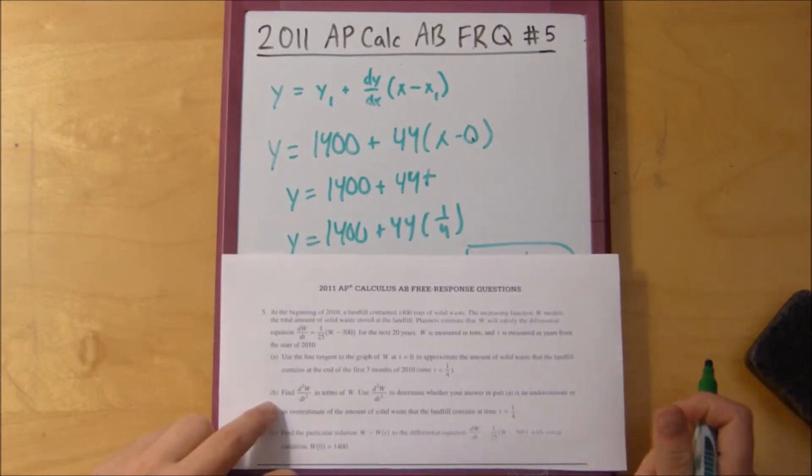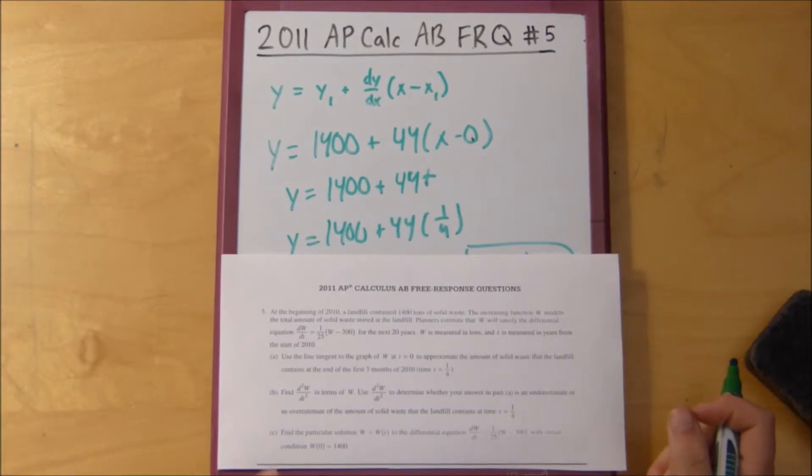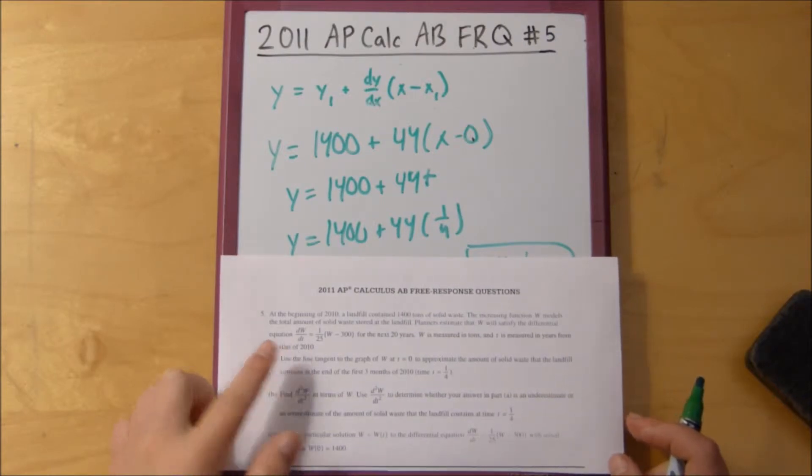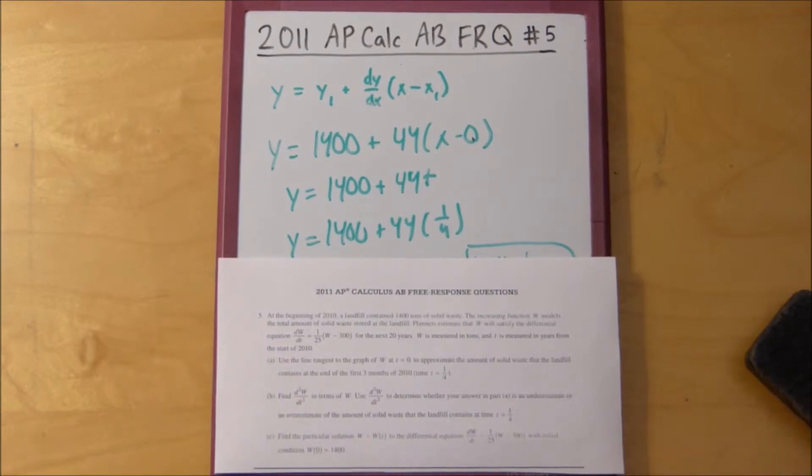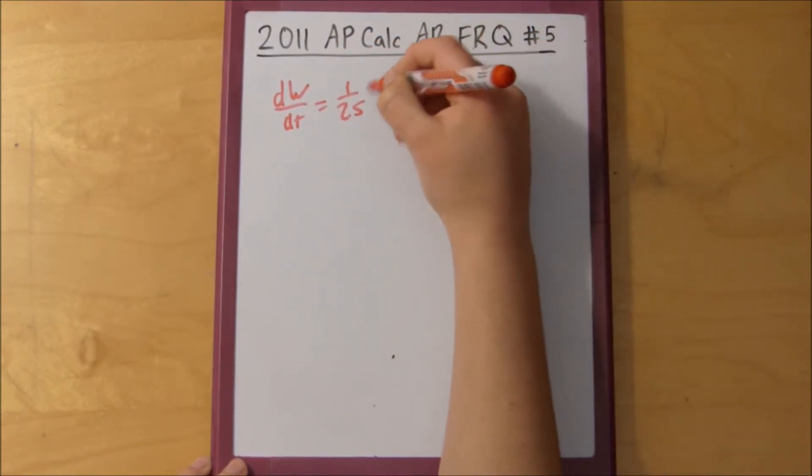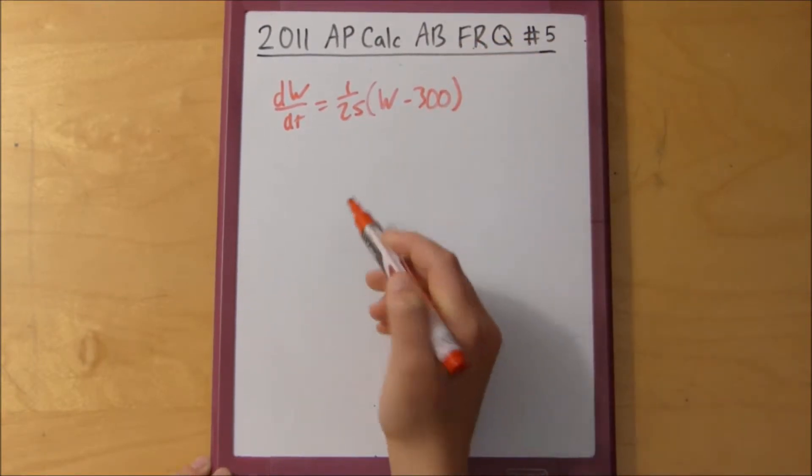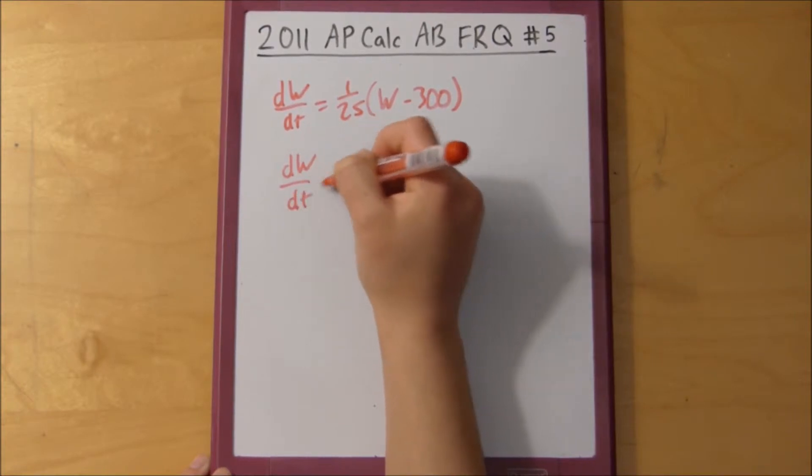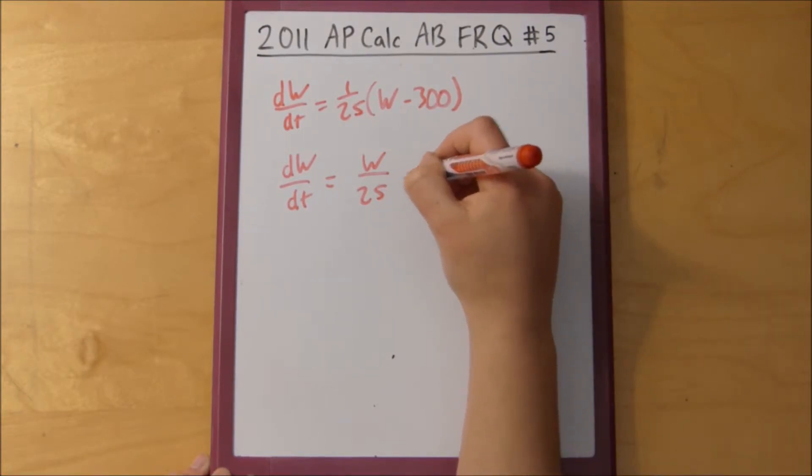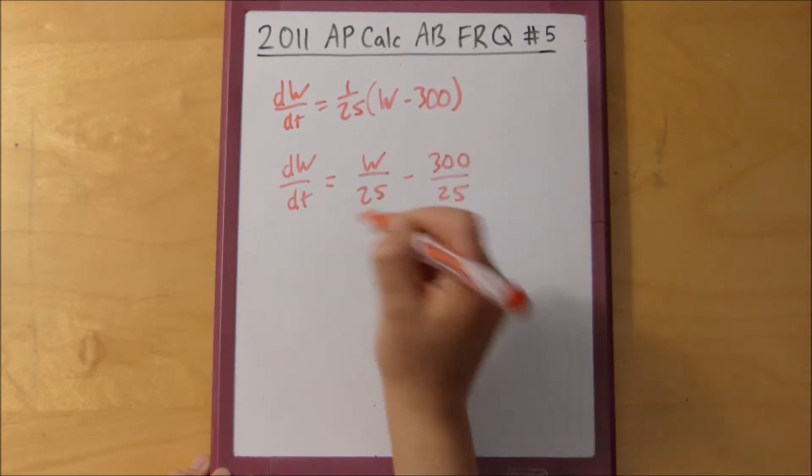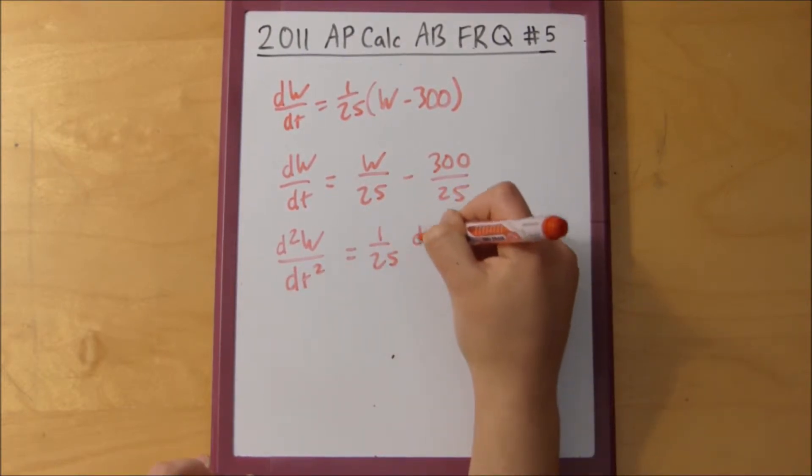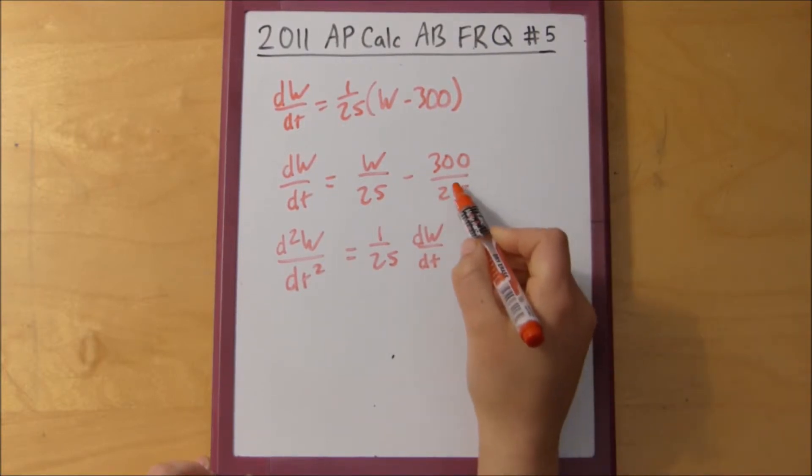Then problem number two asks us to find the second derivative in terms of w. So what we can do is we can simply take what we got as what we were given to be the derivative and we can take the derivative of that again. So we know that dw over dt is 1/25 times w minus 300. And if we multiply this out, make it a little easier to differentiate, w over 25 minus 300 over 25, so then when we take the derivative of this, we get 1/25 dw/dt and then this just goes away because it's just a constant.